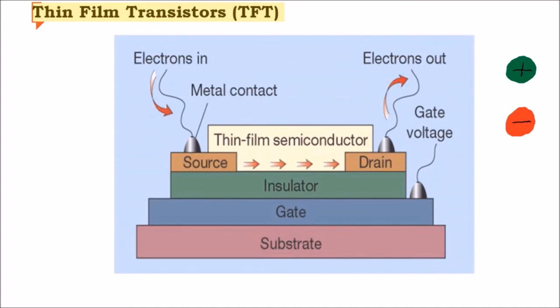In a standalone transistor, there is no current running through. Even if there is an active current on the source, it will not reach the drain.